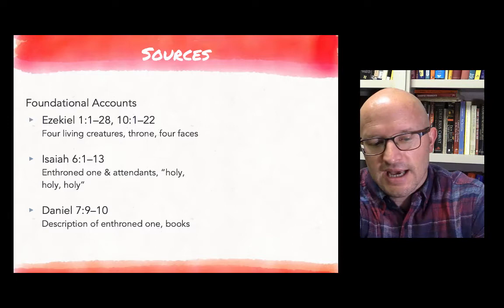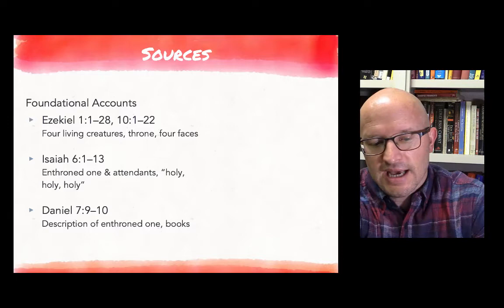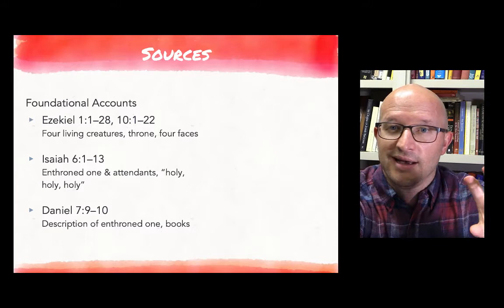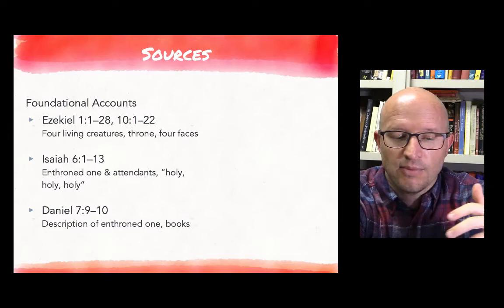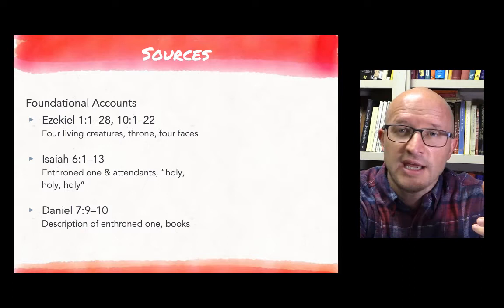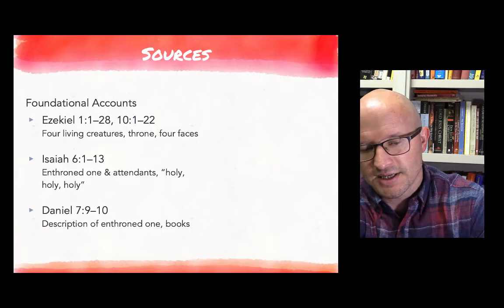A second text that would be important is Isaiah 6, verses 1 through 13. This is the call narrative for Isaiah, but alongside that call narrative is an important vision of the heavenly throne. We see a picture of the one who is enthroned and the attendants, and we get this really important phrase or vision that gets repeated: the angelic being saying holy, holy, holy. We see that in Isaiah 6.